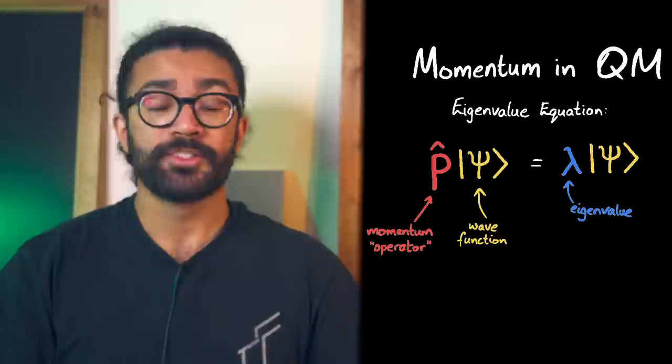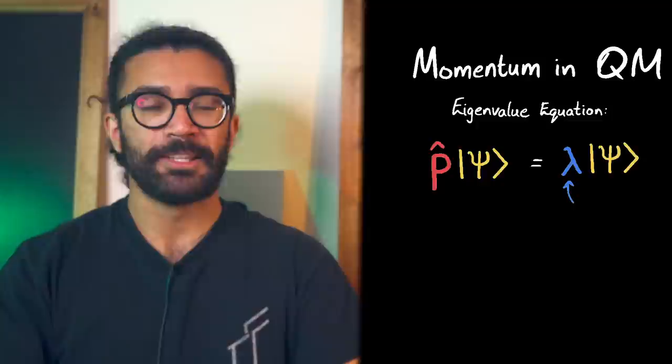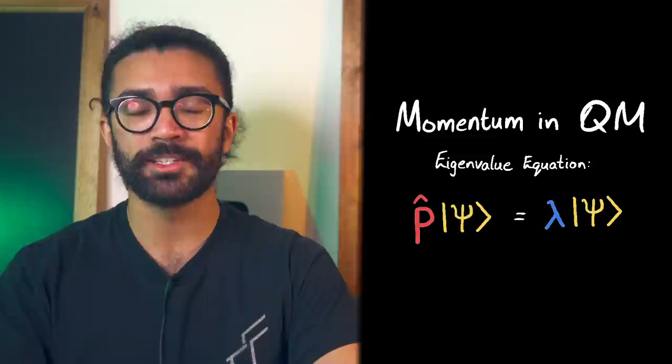So if we want to find a measurement for the momentum of a particle, mathematically speaking, we apply the momentum operator to our wave function, and then we find out what the experimental result may be. Now this is a bit of a simplification of the mathematics that's actually going on, but I've made a more detailed video discussing the eigenvalue equation, which you can check out up here if you're interested.